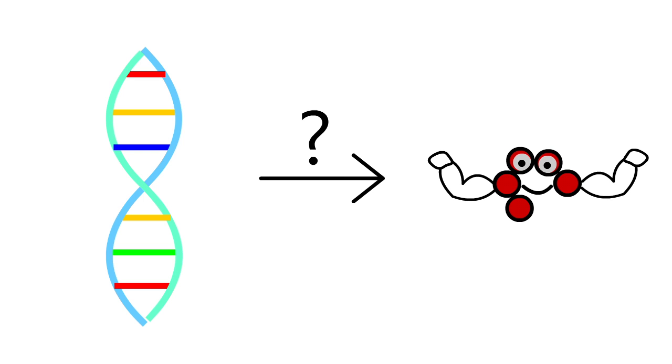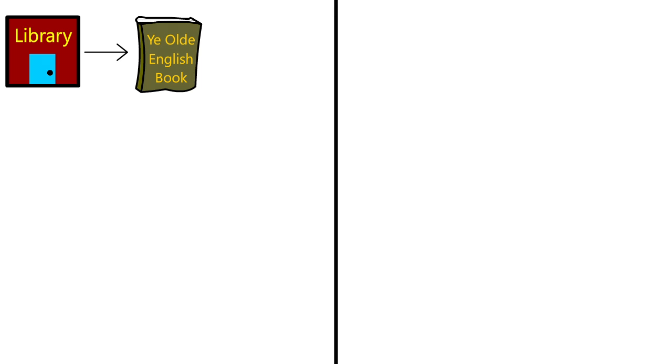To understand how this is done, let's take a look at a different coding system, the English alphabet. In the way that an old, fragile book might be housed in a library, DNA is kept locked up in the nuclei of cells.